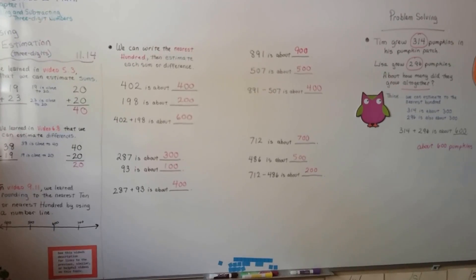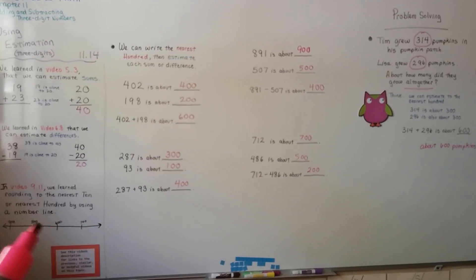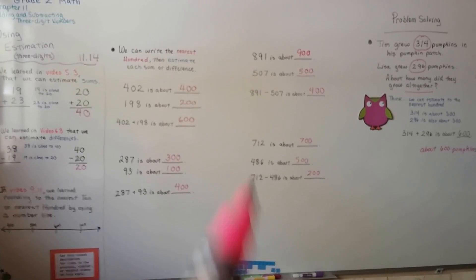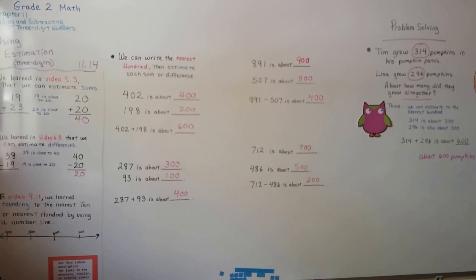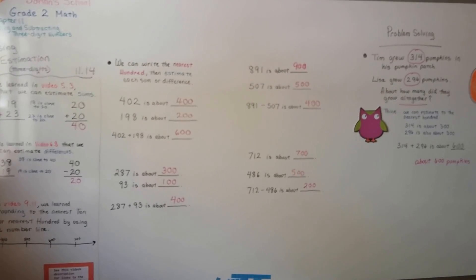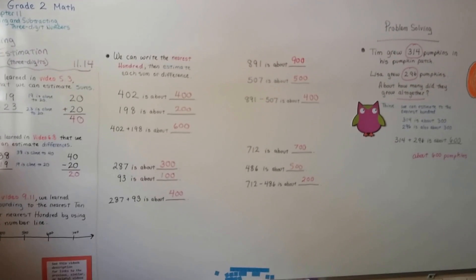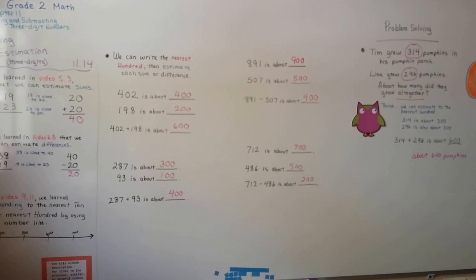You can turn your paper sideways so you have more room to do this, and then see which hundred your number is closest to. Whichever one it is, that's what you estimate it to be in the hundreds, and then you can add or subtract them.